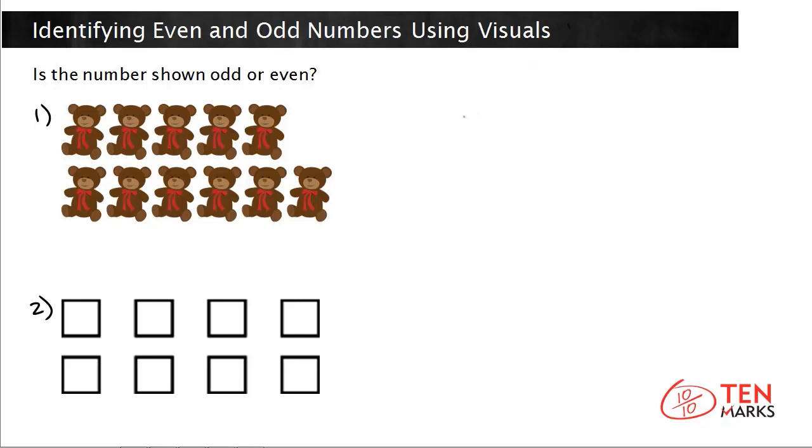Whole numbers can be split into two categories. The first category is even and the second category is odd. Let's talk about even numbers first.